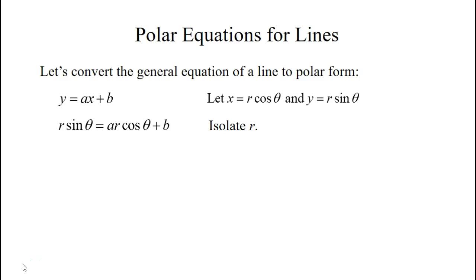Next we're going to isolate r. We can do this by bringing ar cosine theta over to the other side. Then we'll factor out the r, so we have r times sine theta minus a cosine theta equals b.